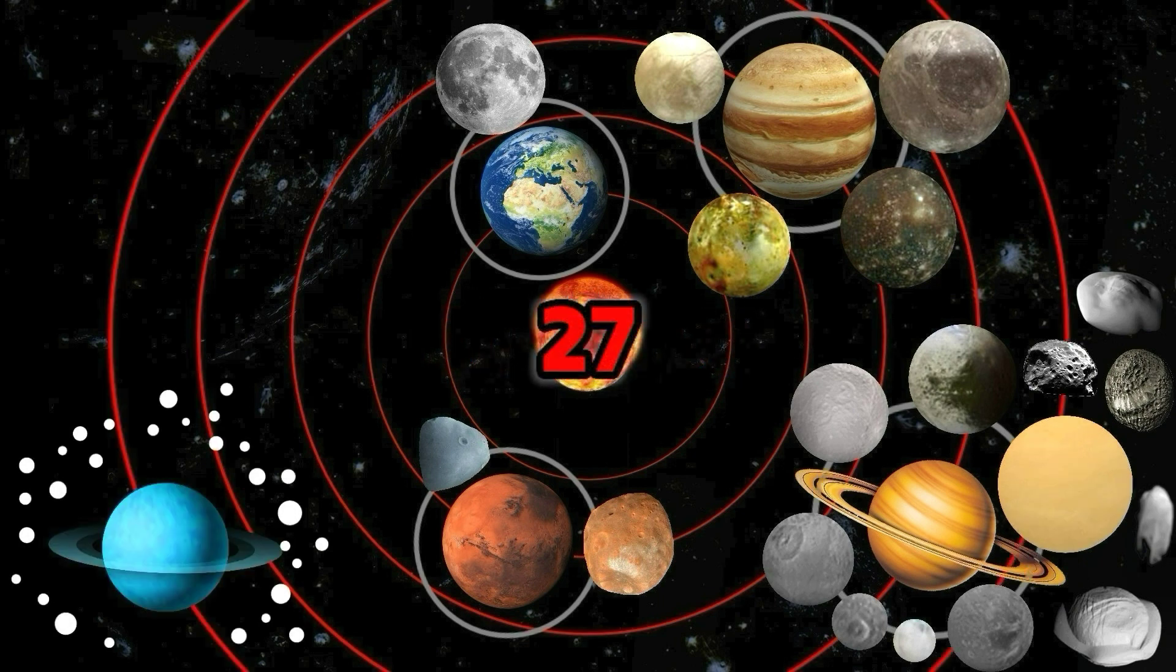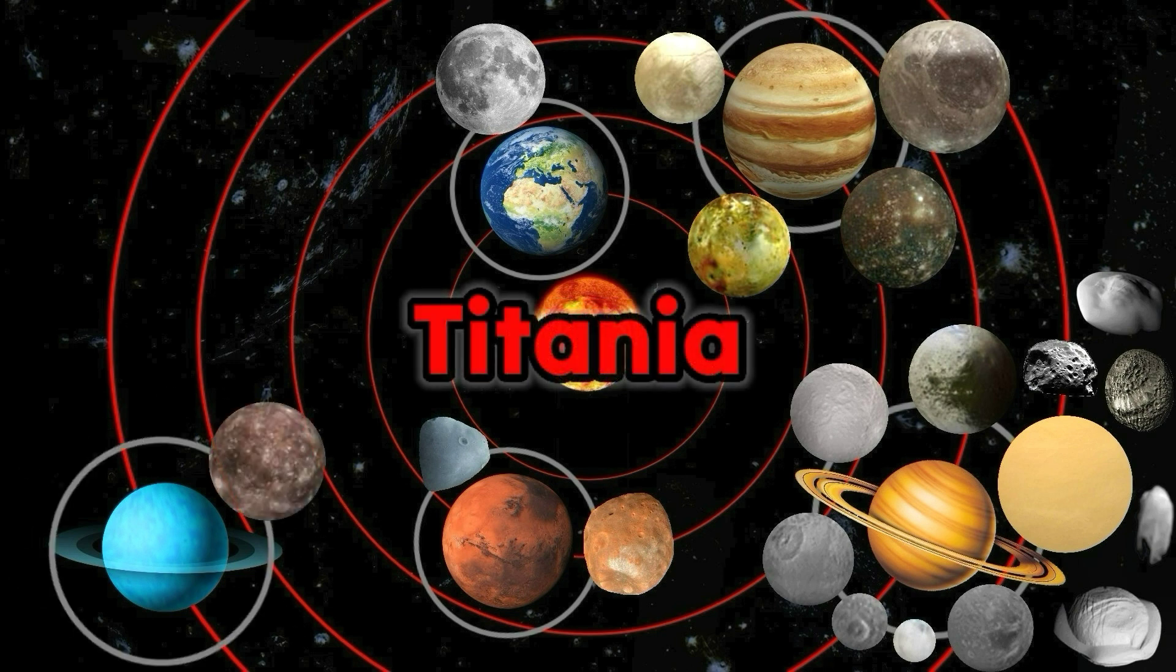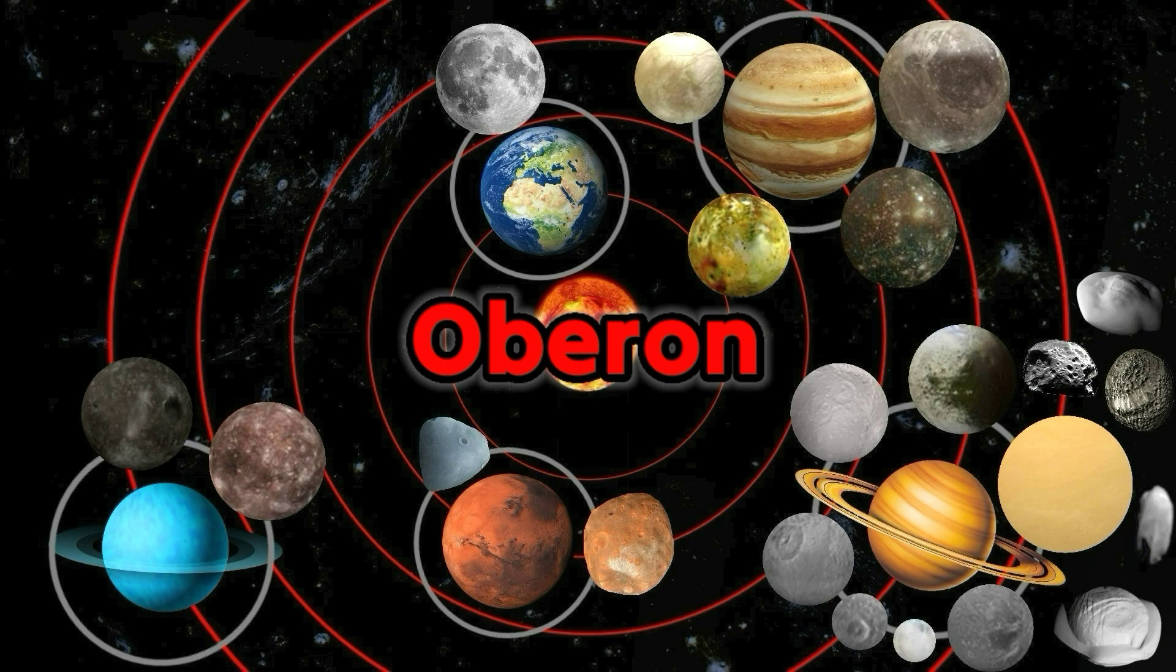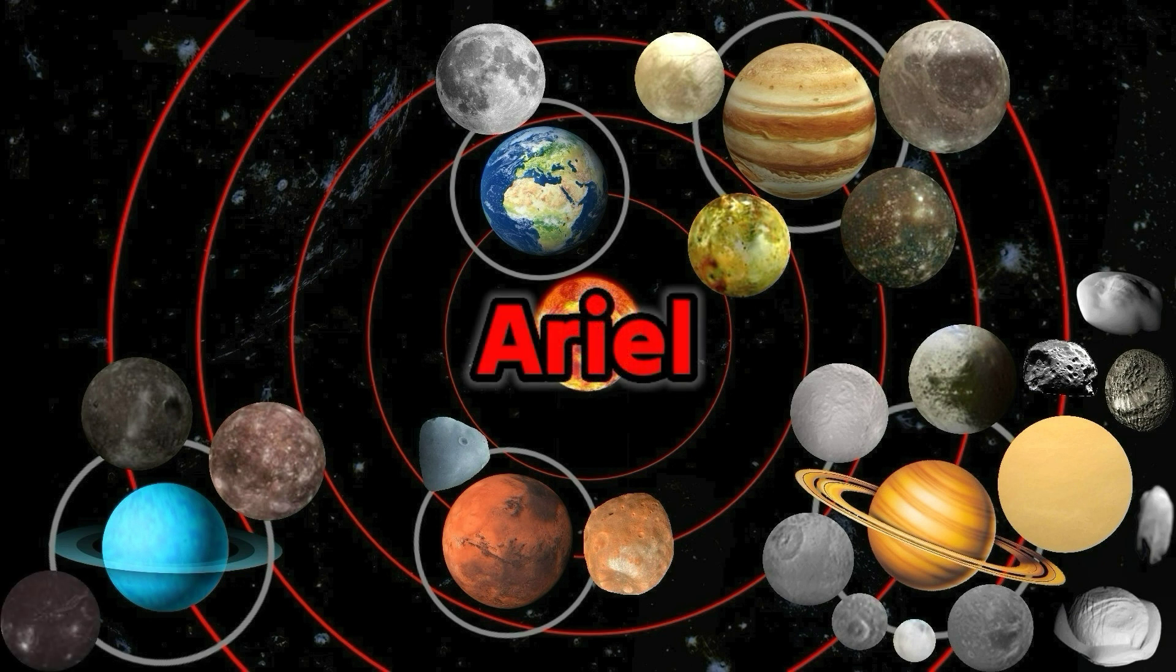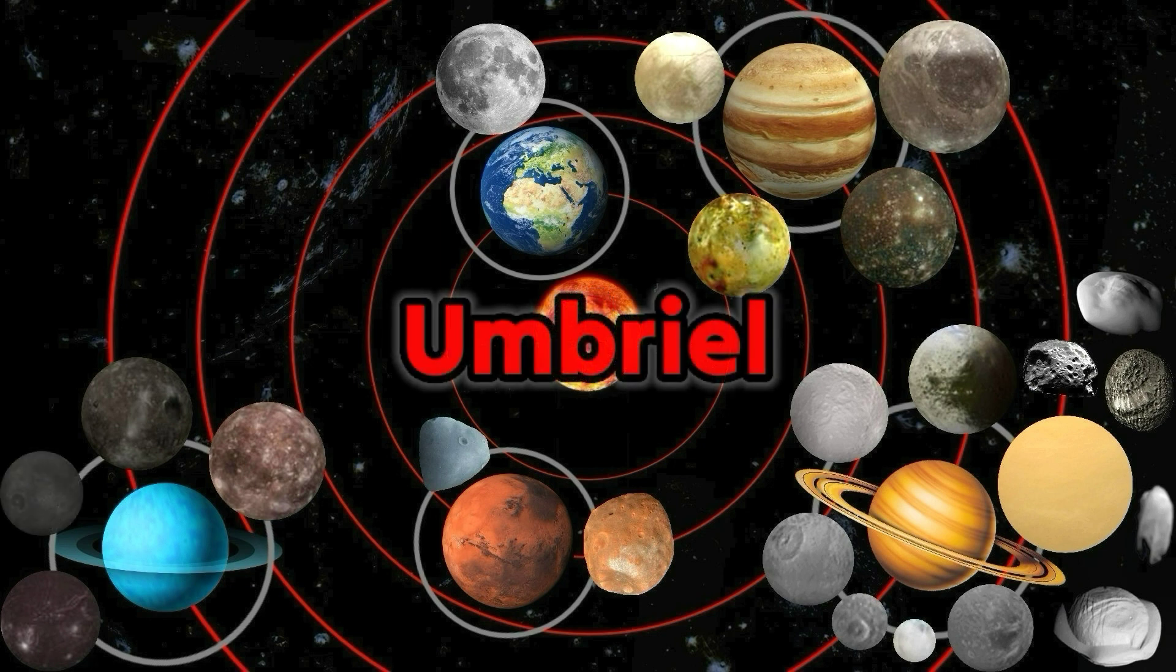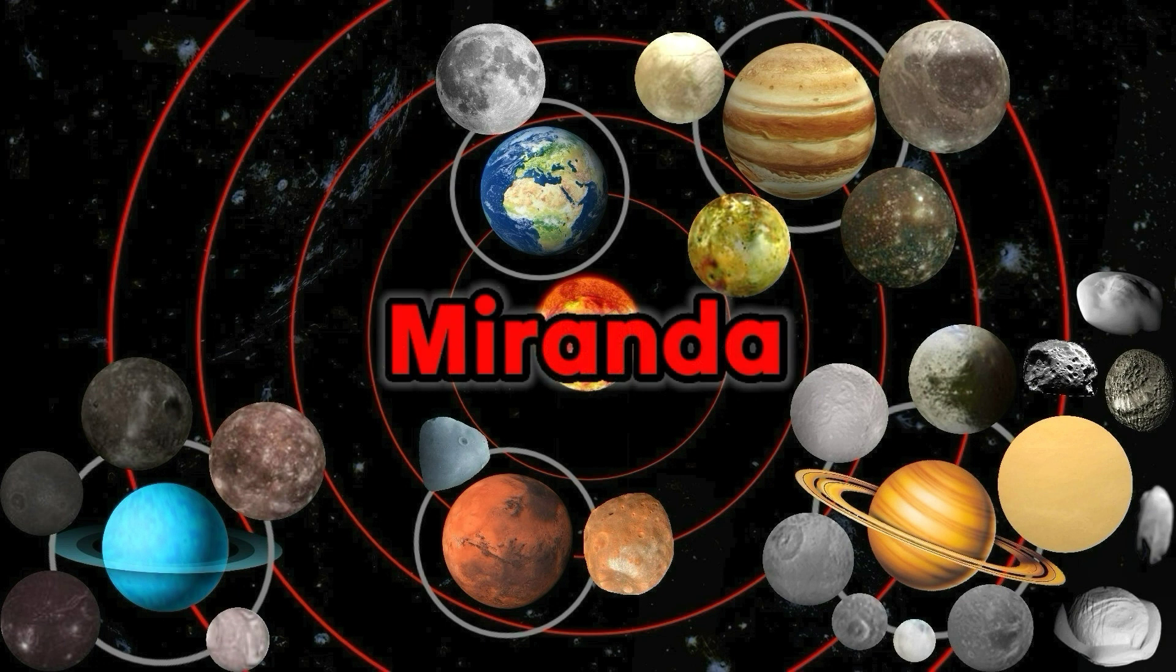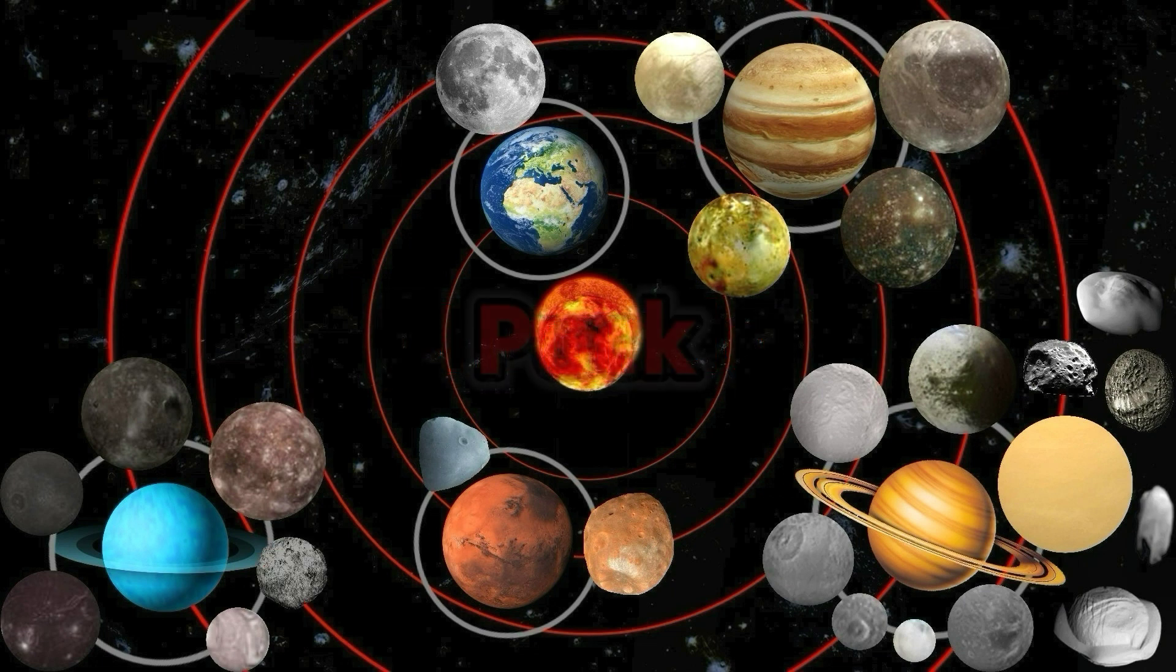Uranus has 27 moons: Titania, Oberon, Ariel, Umbriel, Miranda, Puck.